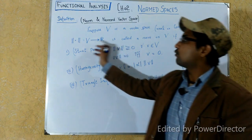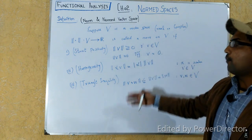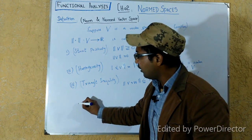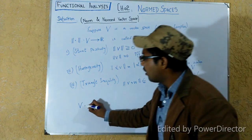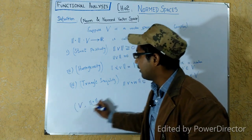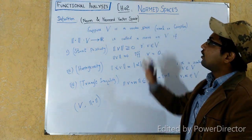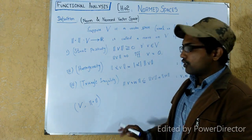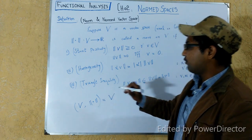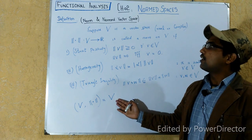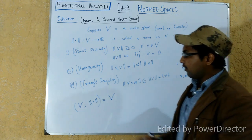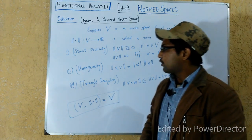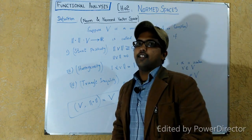If this function satisfies these three properties, we say that it is a norm on the vector space V. When we equip the vector space V with this norm, the ordered pair is called the normed vector space or the normed linear space. If there is no danger of confusion, we can simply write the vector space V and call it the normed vector space. We will learn examples of normed vector spaces in the next lecture. Thanks for watching.